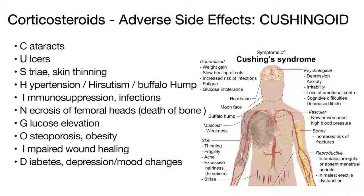Corticosteroids are a class of steroid hormones used to suppress an overactive and unwanted immune response, decreasing swelling, redness, itching, and allergic reactions. However, they also have side effects that can be very serious, typically presenting as drug-induced Cushing syndrome. Remember CUSHINGOID: cataracts, ulcers, striae and skin thinning, hypertension, hirsutism, and buffalo hump.